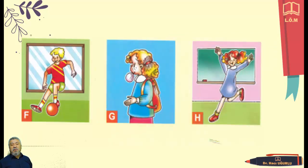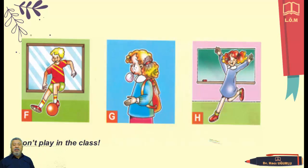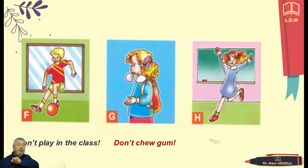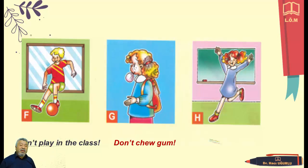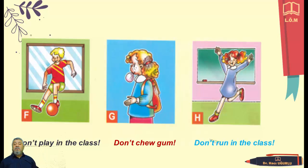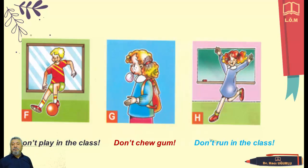First picture, a boy is playing football: don't play in the class. And another — a girl chewing gum — what can we say? Don't chew gum. It's forbidden. And the other, the girl is running in the class: don't run in the class. Now let's repeat them together — first me, then you: don't play in the class, don't chew gum, don't run in the class.